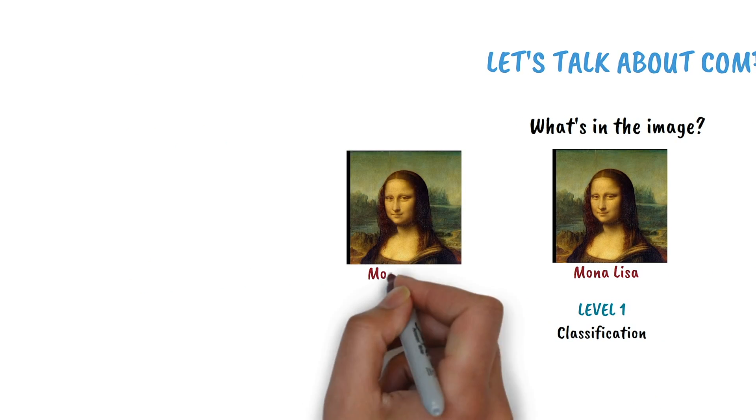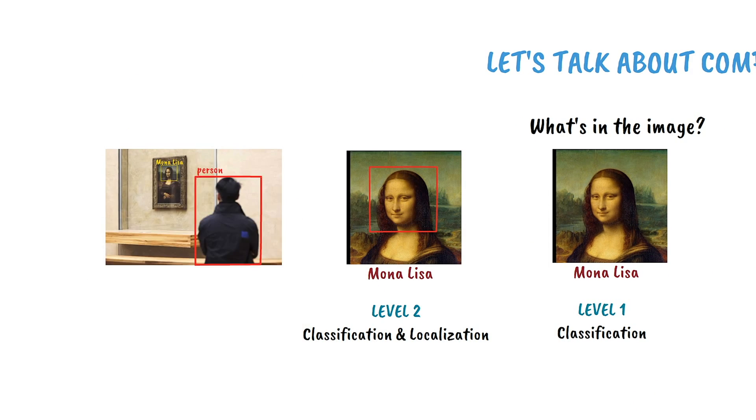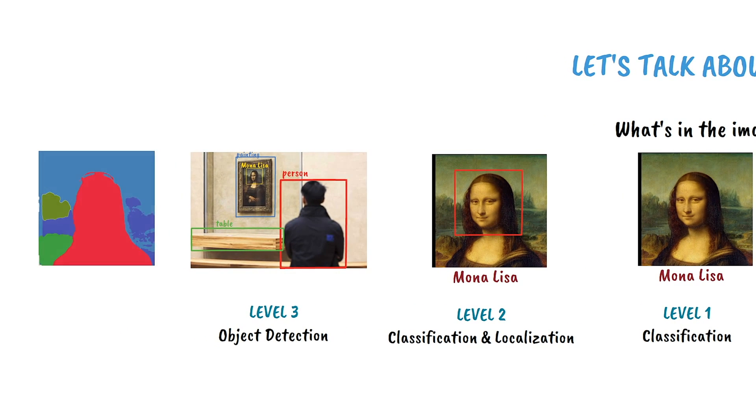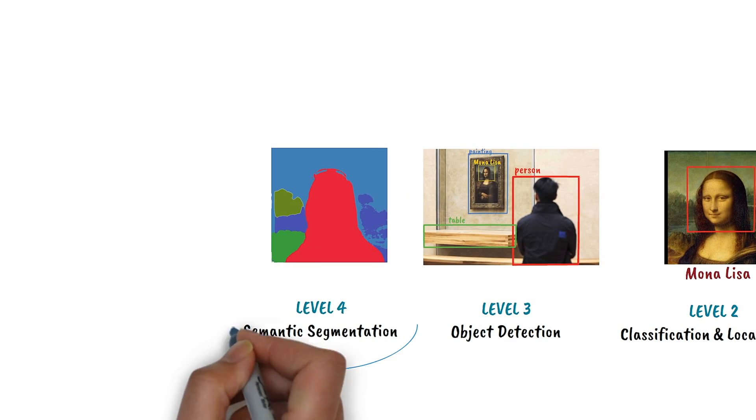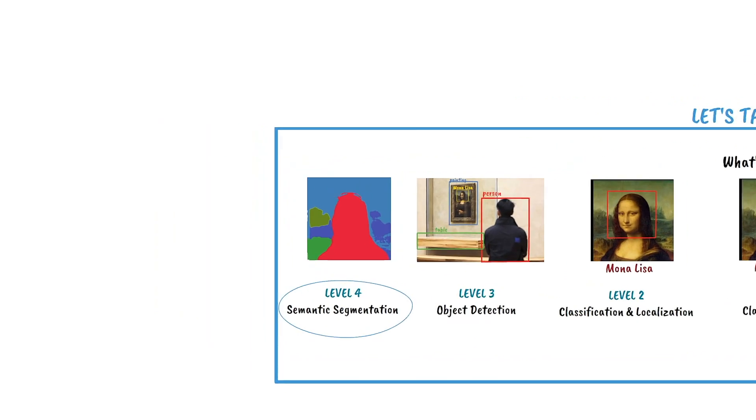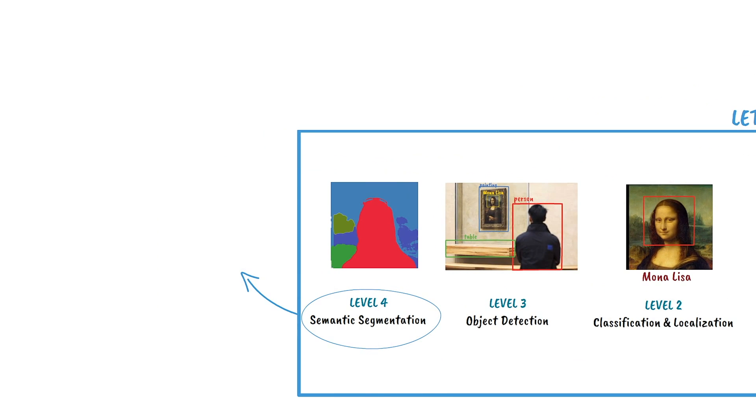Level 2 is classification plus localization. Level 3 is object detection. And level 4 is semantic segmentation, where the position of each type of object in an image is exactly determined. Now stable diffusion uses the level 4.